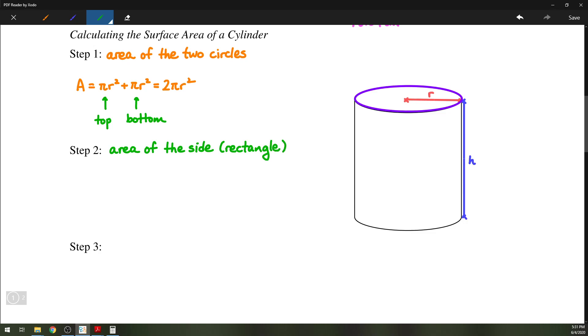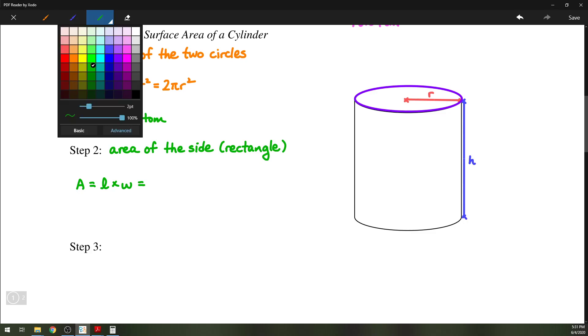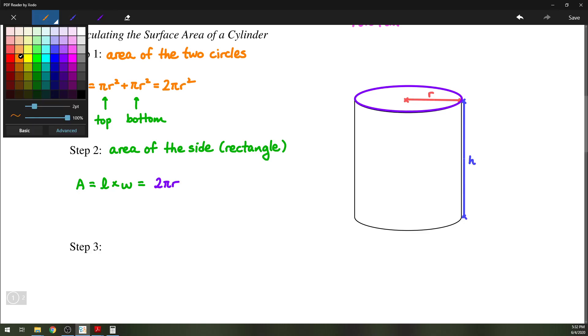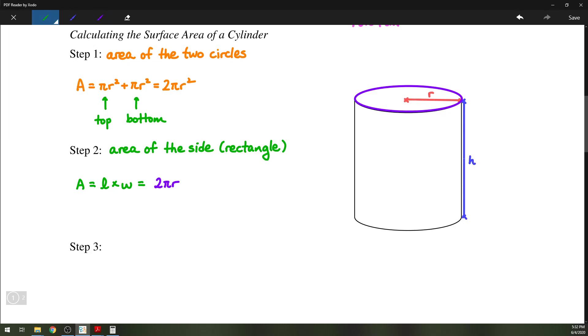So since it is a rectangle, we have A equals length times width. The length of the side would just be equal to the circumference of the circle, so 2 pi R multiplied by the height of the cylinder, which is the width of the rectangle. And so combined, we'll have 2 pi R H for the second part.